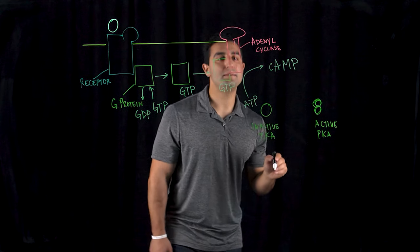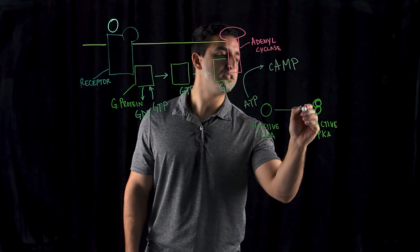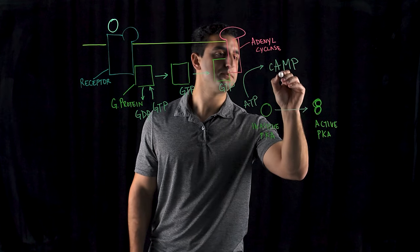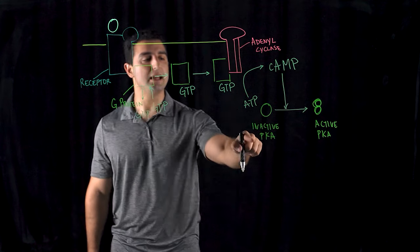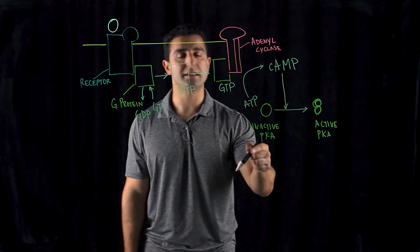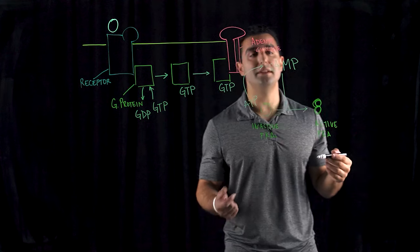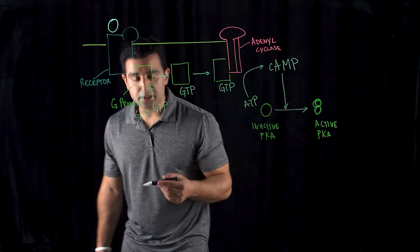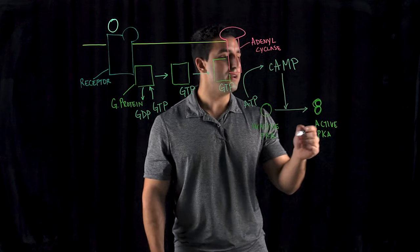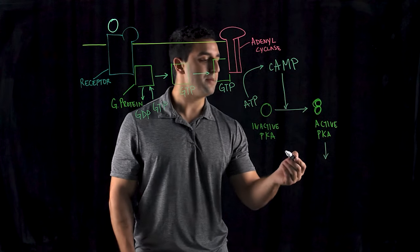Cyclic AMP's main role is the activation of this downstream molecule called protein kinase A. Protein kinase A is usually inactive. Its main functions include enzymatic activity, certain gene activations, and stimulating certain cellular secretions. When it becomes active, you have all these physiological changes that happen.